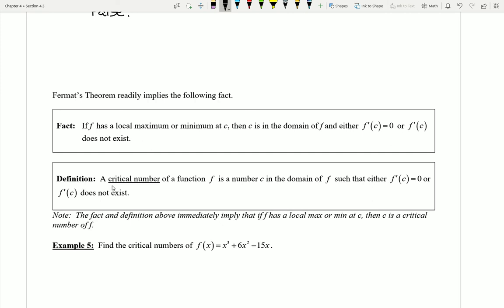And we'll call these points critical points of the function because they are critical to understanding where these mins and maxes are. So a critical number again is going to be just an x value that makes our first derivative equal to zero or undefined, makes it not exist.